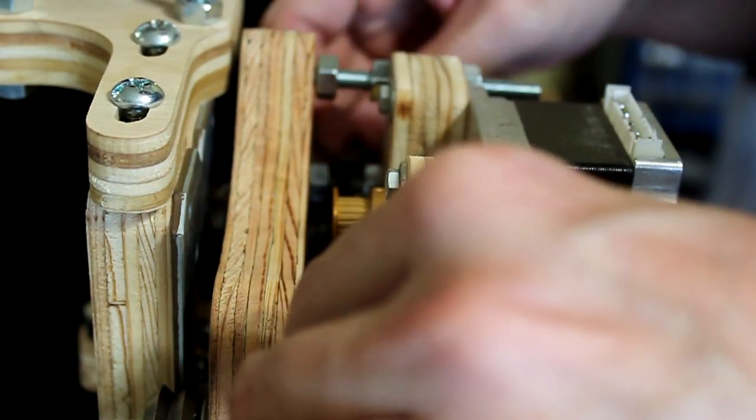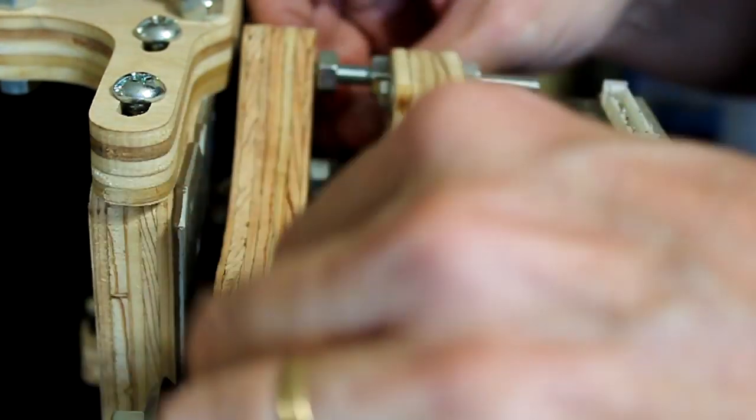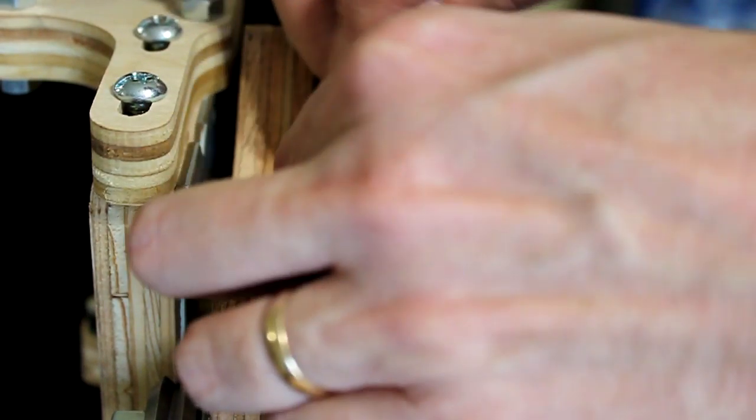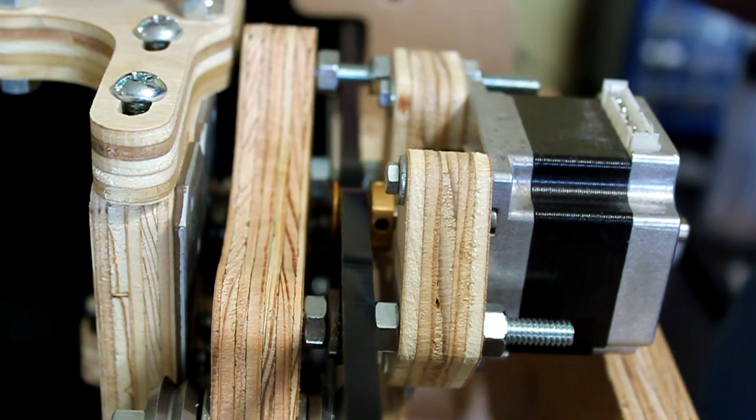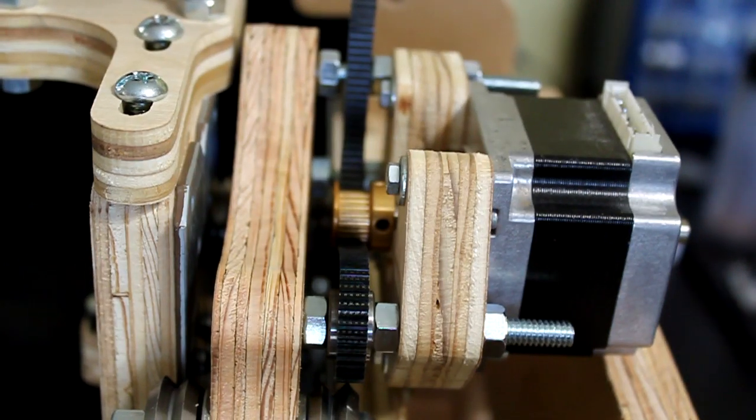Now the timing belt will need to be routed around the pulley and the idler bearings. From this point of view, the timing belt will need to be routed under and over the bearing and then under and over the timing pulley as shown in the video. Prior to this, make sure that the timing pulley is aligned with the idler bearings.